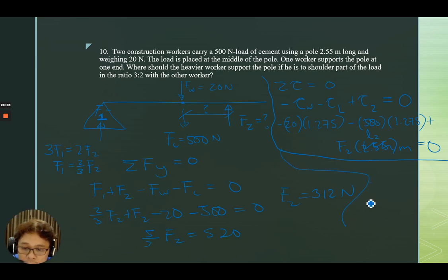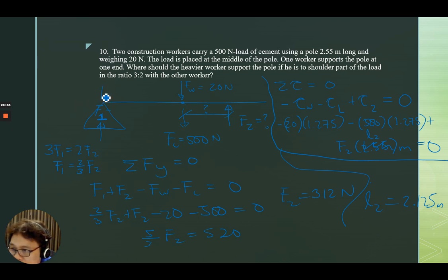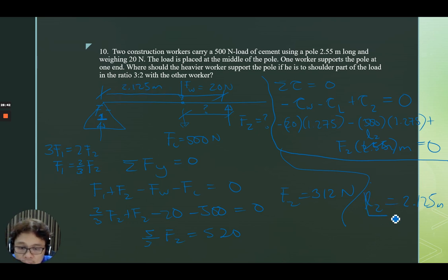We substitute 312 newtons back into the torque equation to solve for L2. L2 equals (20 times 1.275 plus 500 times 1.275) divided by 312 newtons. The location is 2.125 meters from the fulcrum — that is where the heavier worker should support the pole.